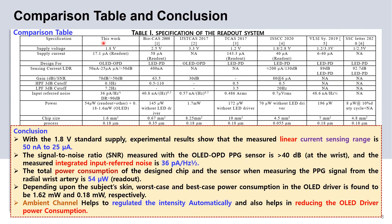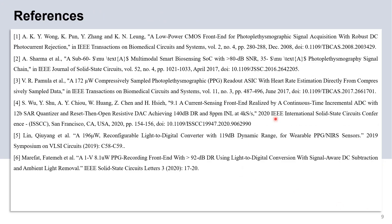This is the specification of our design readout system. This study concludes that the linear current sensing range of the readout is 50 nanoampere to 25 microampere. The input referred noise is 36 picoampere per root hertz. The total power consumption of the readout is 54 microwatt. The ambient channel helps to regulate the intensity automatically and also helps in reducing the OLED power consumption. This is the key reference.